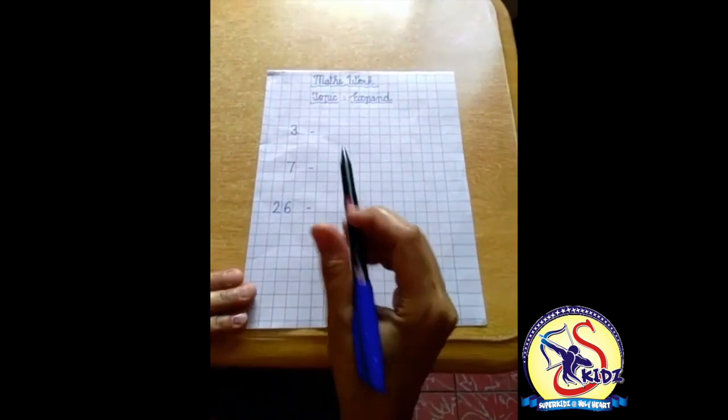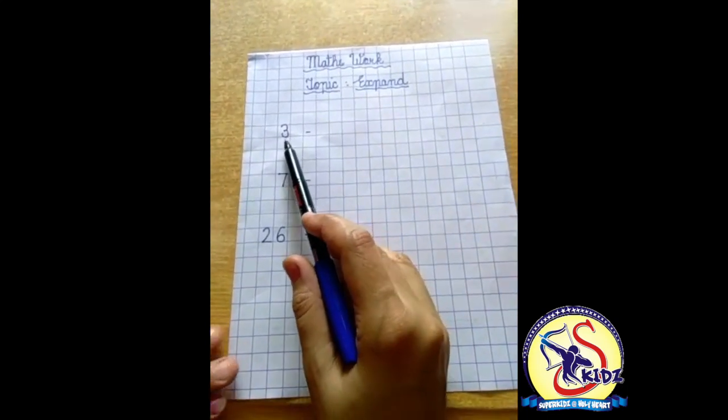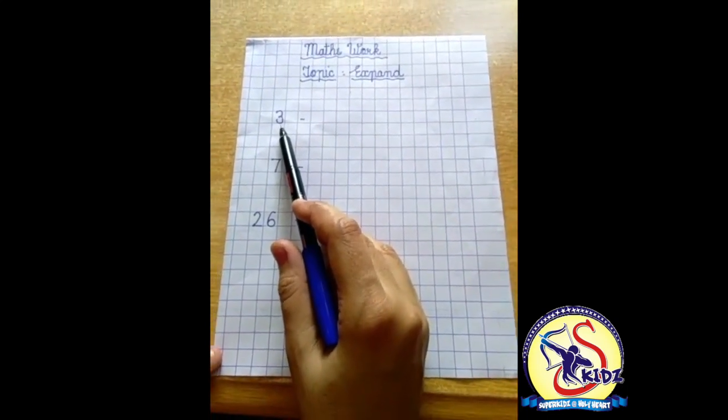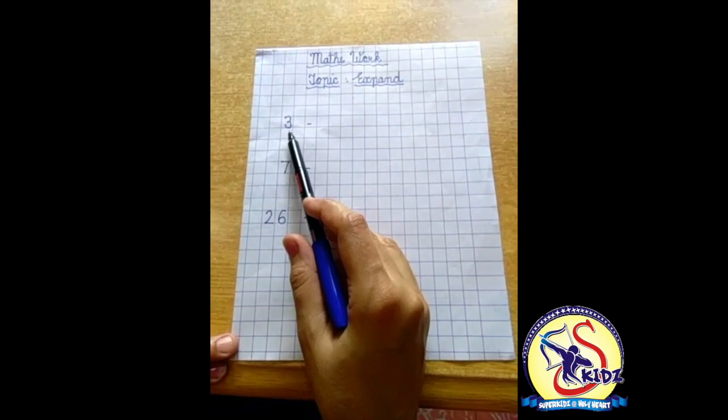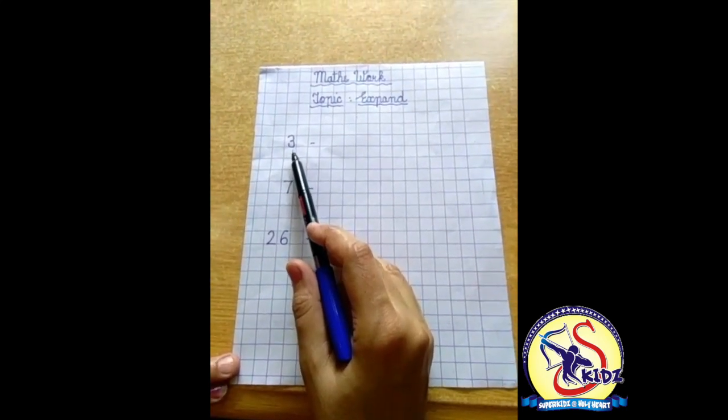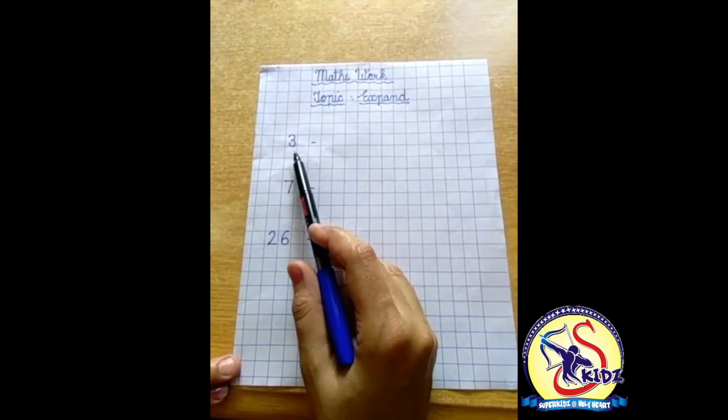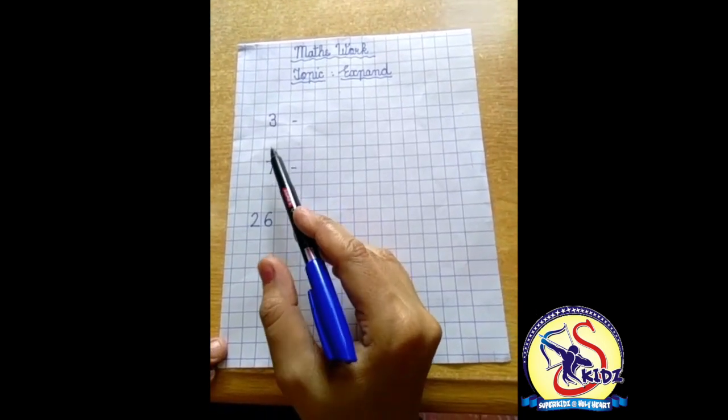Now see, these are numbers. The first number is 3. As we know, every single digit number has the value of ones.